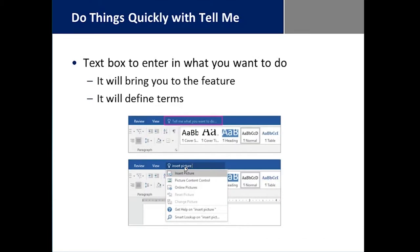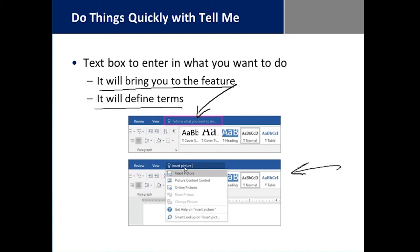We have an ability to do things quickly with a feature called Tell Me. Tell Me allows you to go into a little text box and tell it exactly what you want to do. It will either bring you right to the feature or it will define the term. So you click there and say, for example, I want to insert a picture, and it automatically brings you to Insert Picture and highlights the choice for you in the menu so you can take it from there.